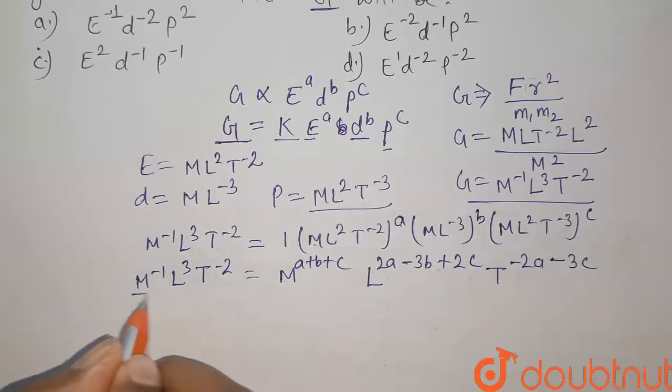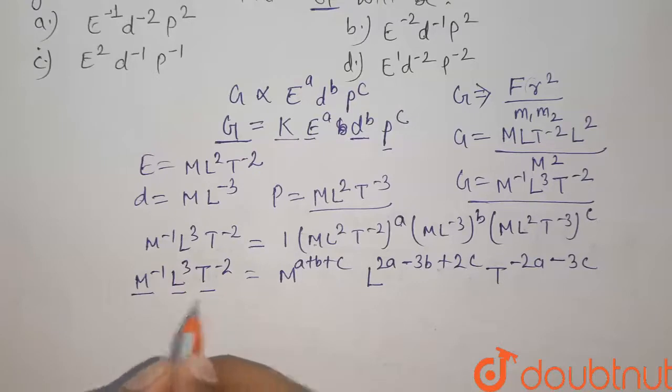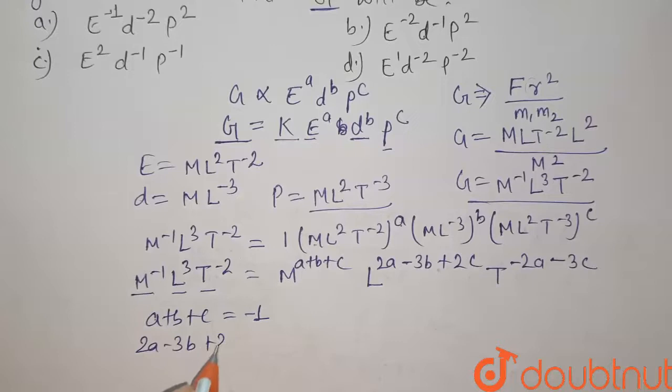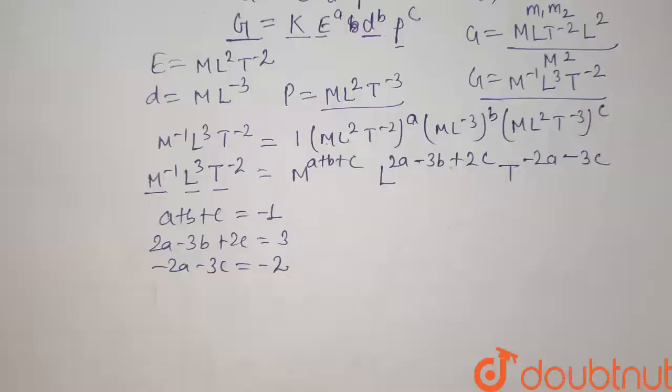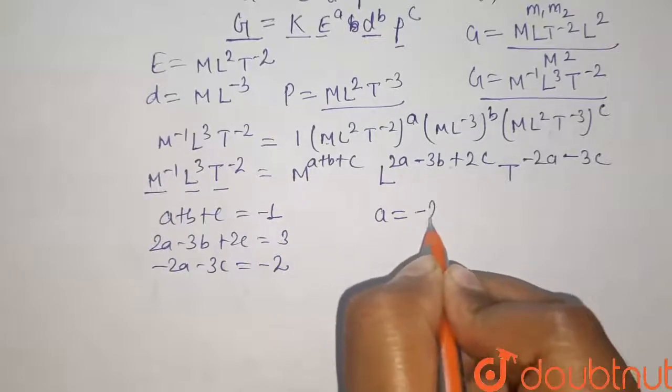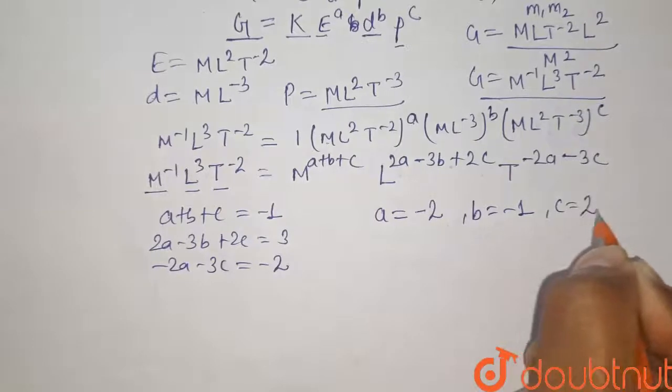Now compare the powers of M, L and T on both sides and find the values of ABC. So now on comparison we have A plus B plus C equals to minus 1, 2A minus 3B plus 2C equals to 3, and minus 2A minus 3C equals to minus 2. Now on solving these three equations we get A equals to minus 2, B equals to minus 1, and C equals to 2.